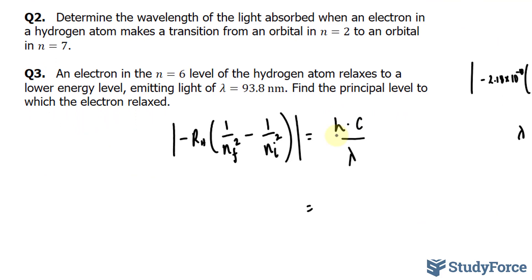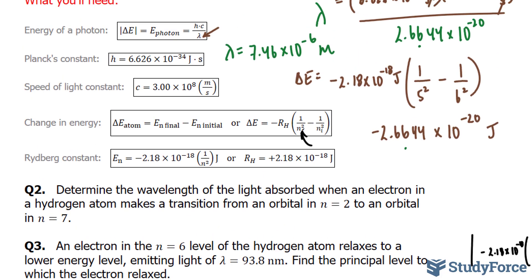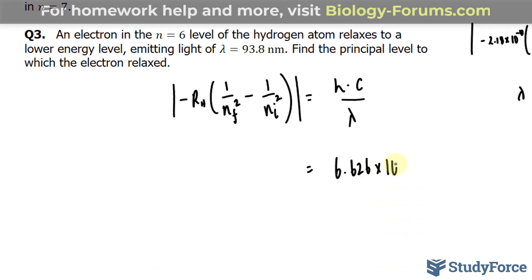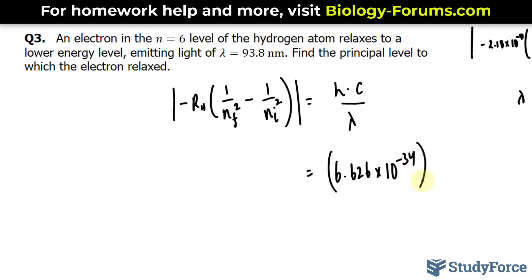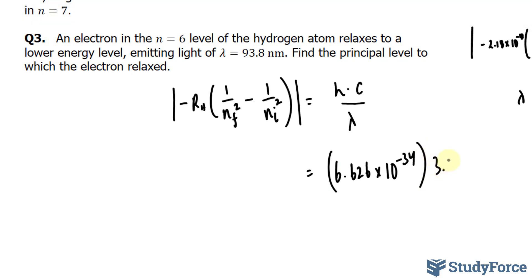h is our Planck's constant, and that is 6.626 times 10 to the power of negative 34. Multiply to the speed of light, 3.00 times 10 to the power of 8 meters per second. Now the reason why I wrote that meters per second is because here we have our wavelength in nanometers. That needs to be converted into meters because of this.